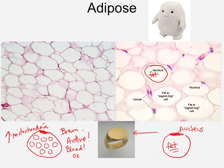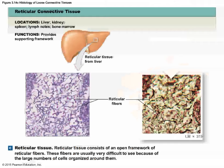Brown fat's many mitochondria and blood supply give it that brown color. White fat — the kind you encounter when eating chicken or other animal — is white or yellow in appearance. That's why it's called white fat.